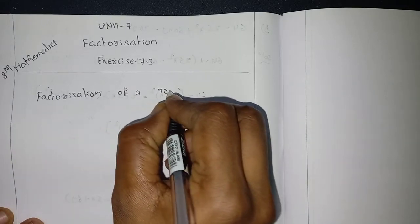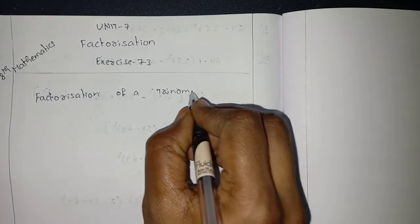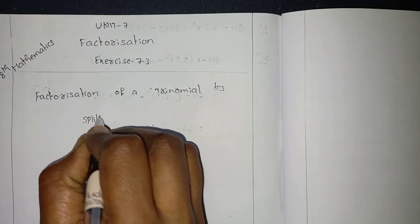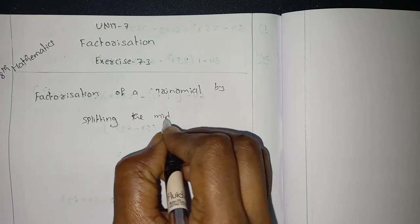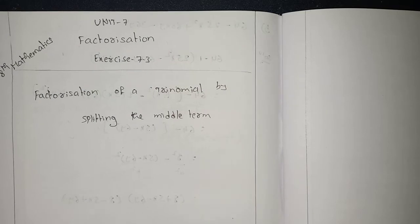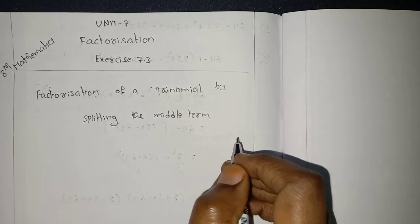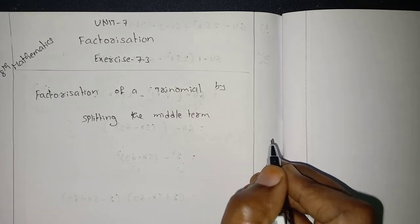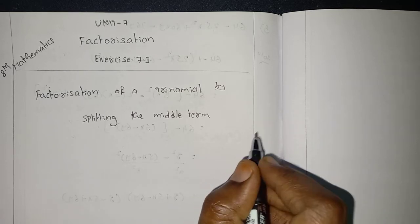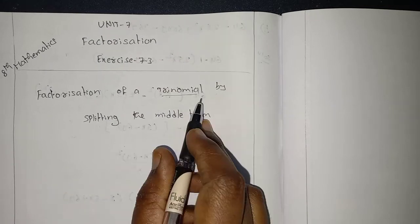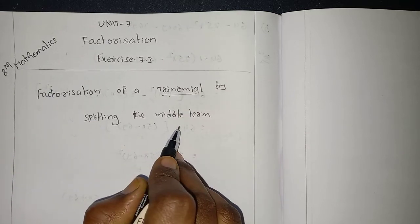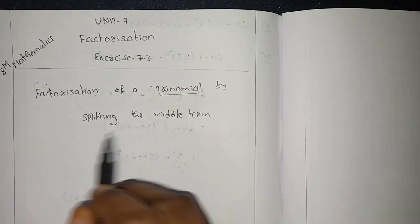Factorization of a trinomial by splitting the middle term. You have already learned how to do factorization using some formulas like a plus b whole square, a minus b whole square, a square minus b square. But here, we are going to take a trinomial expression and factorize it by splitting the middle term.